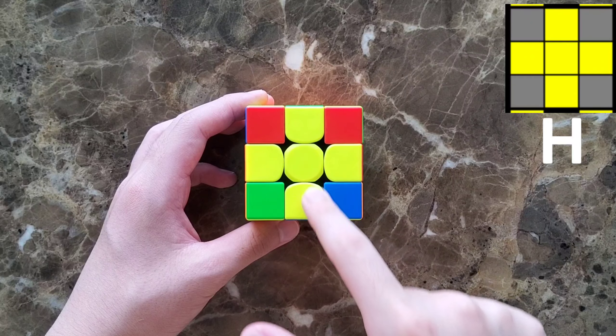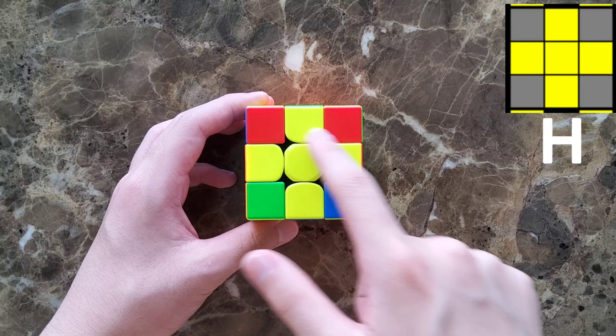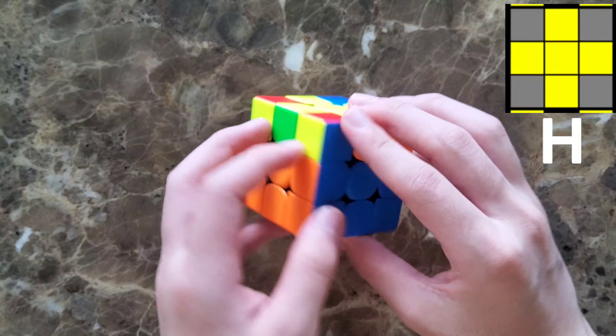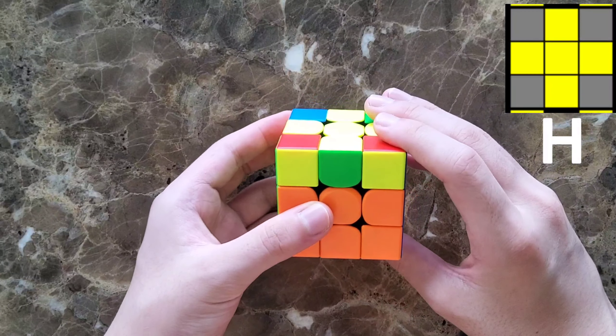The first one is there's a cross, and then in the bottom, there are 2 yellows on the opposite side. Then you use this algorithm.